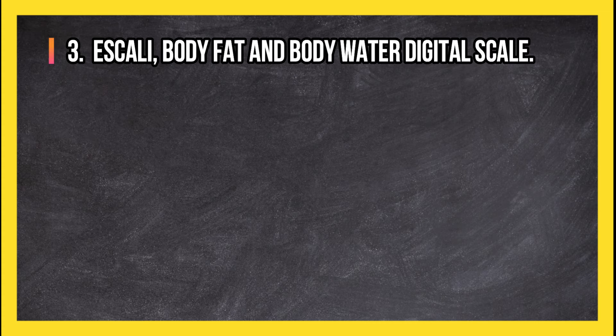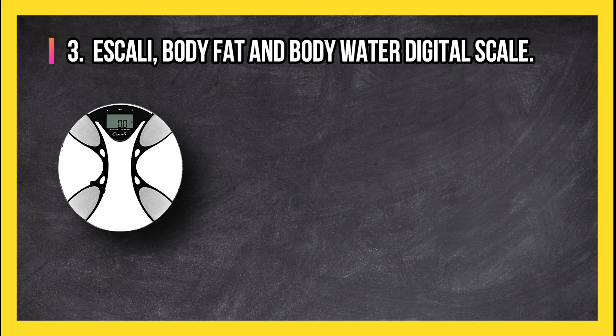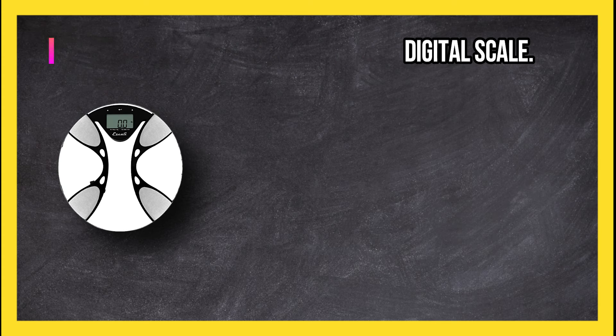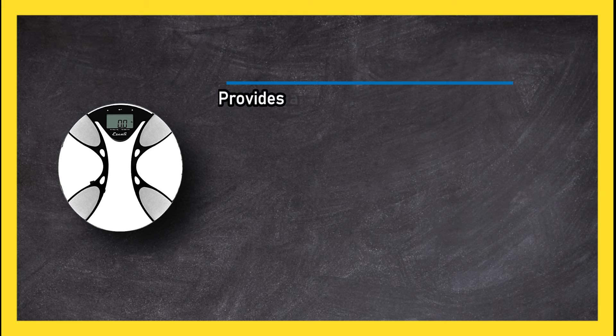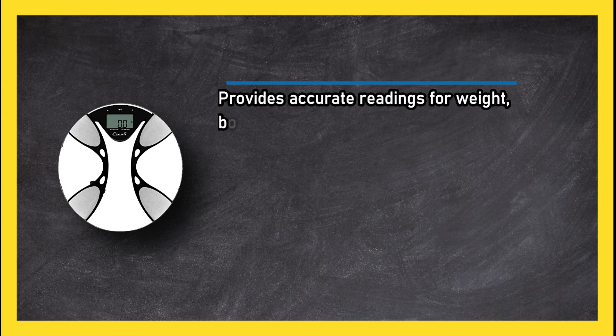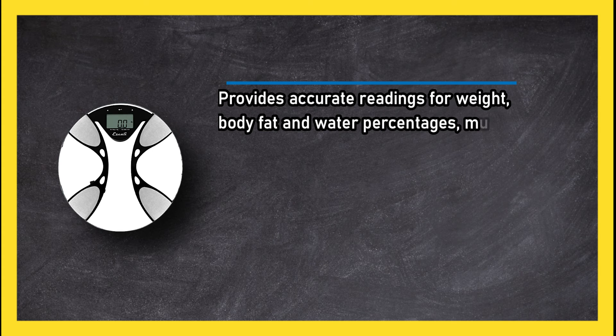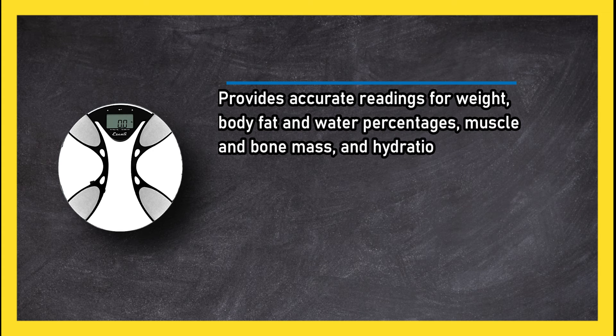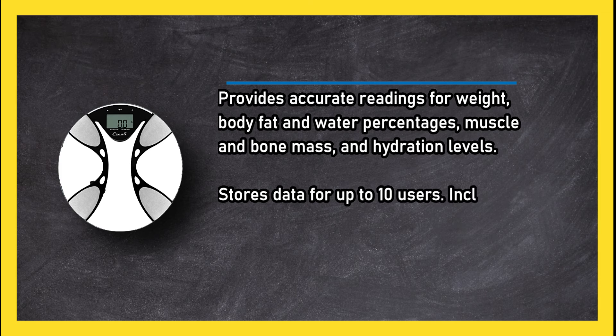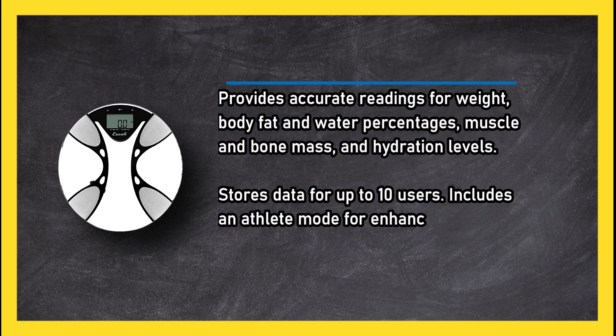At number three, the Carly Body Fat and Body Water Digital Scale provides accurate readings for weight, body fat and water percentages, muscle and bone mass, and hydration levels. Stores data for up to 10 users, includes an athlete mode for enhanced accuracy based on lifestyle.